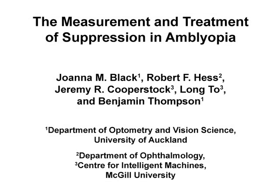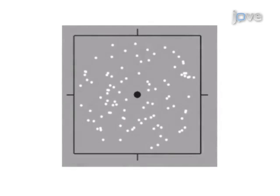The overall goal of this procedure is to quantify interocular suppression in patients with amblyopia and treat this suppression where appropriate. This is accomplished by first familiarizing the observer with the psychophysical task used to assess interocular suppression and providing careful instructions to ensure that the test is completed correctly.